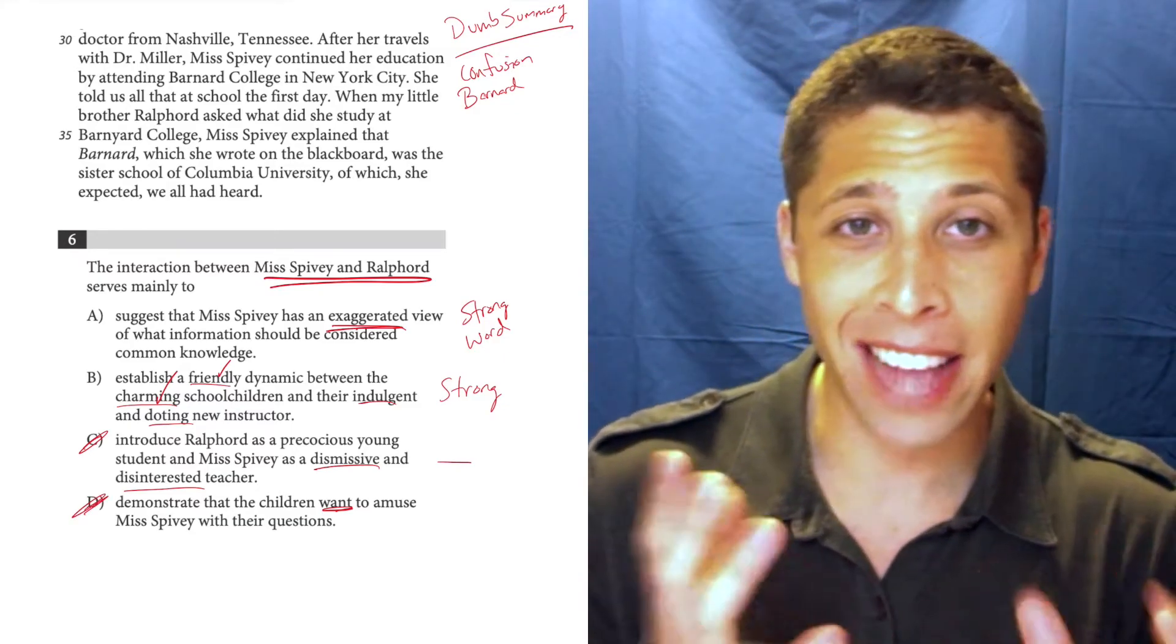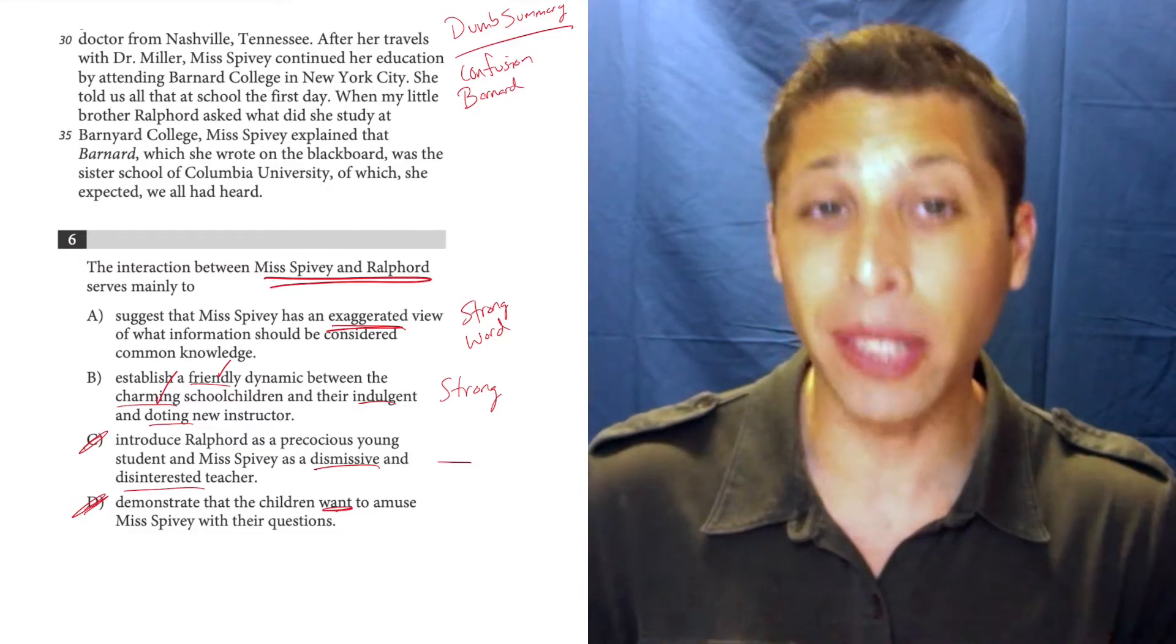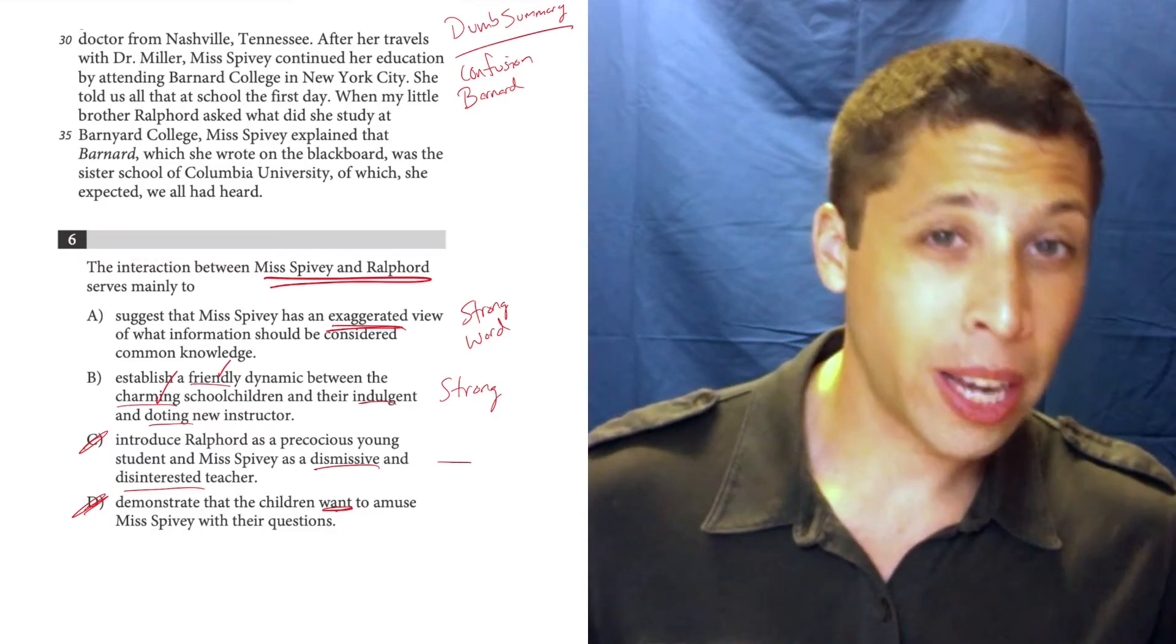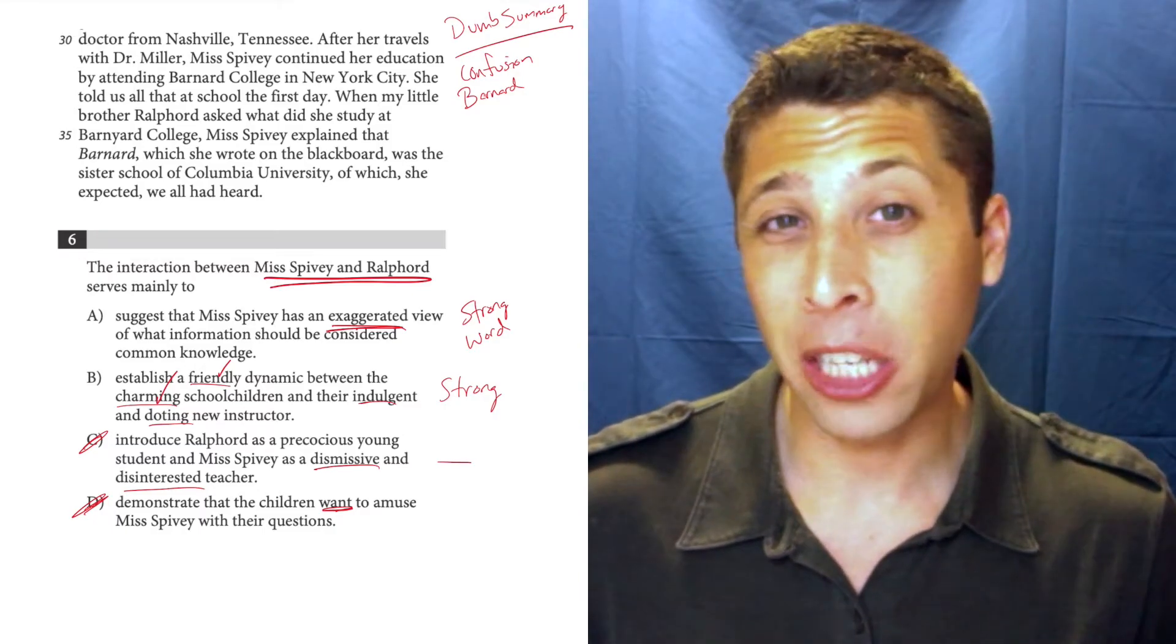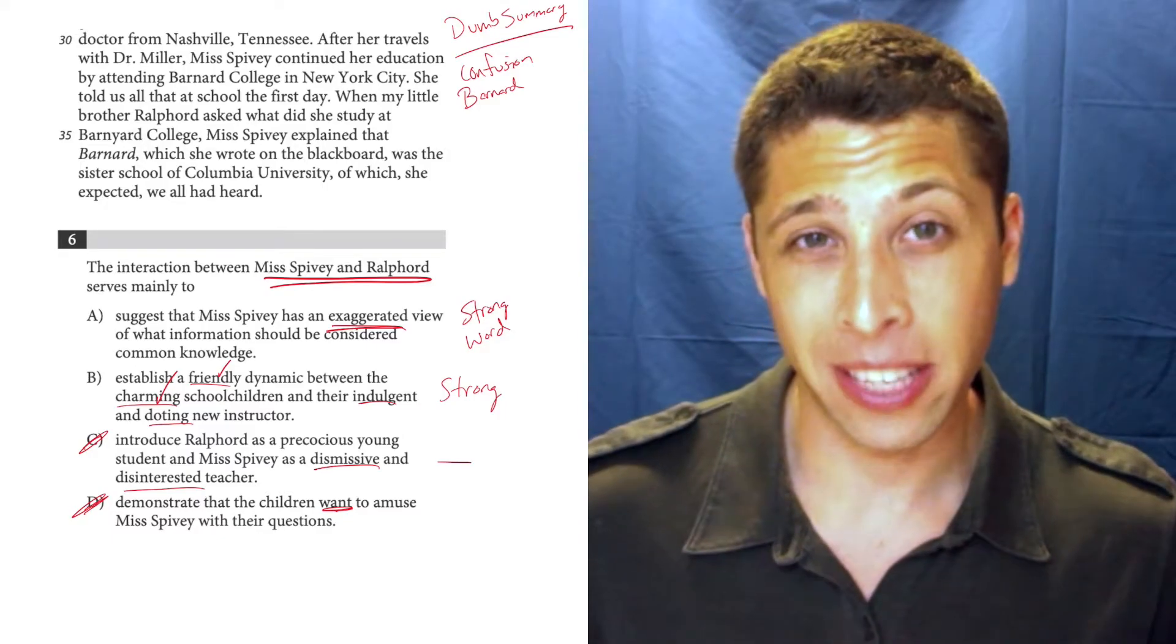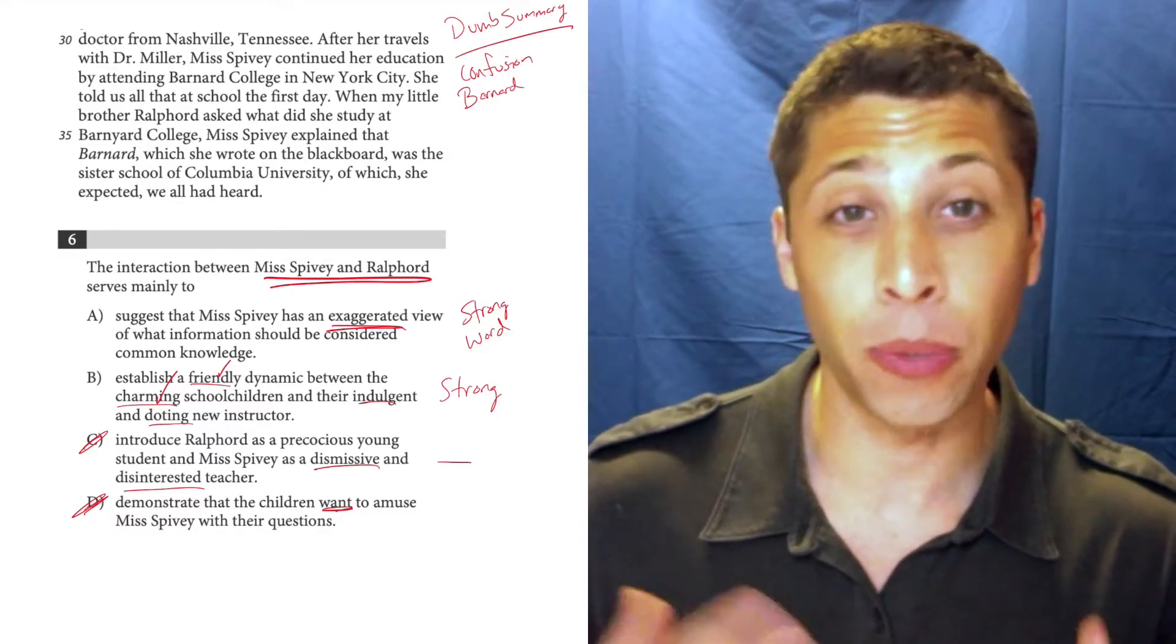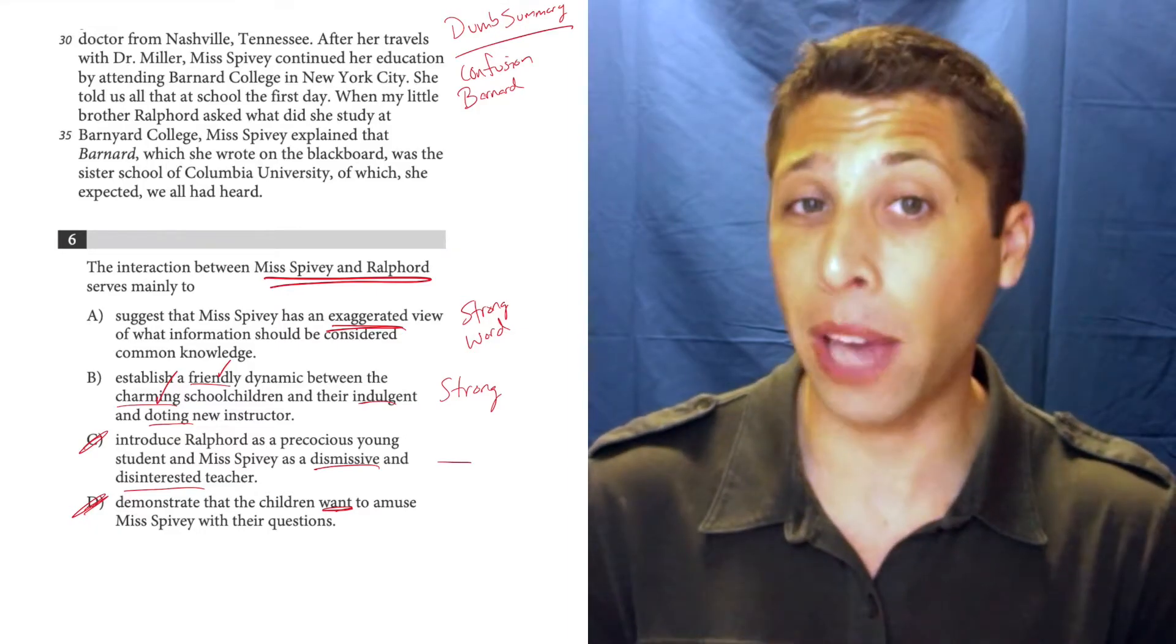And I think that A and B are very similar, and so now we really need to dive into those strong words. If she's indulgent and doting, that's supposed to be a good thing, a positive word. In this case, indulgent means you kind of like let the kids get away with stuff, and doting means you're really caring about them. So if you know the vocab, that can really help here.